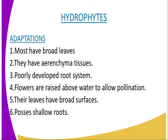Mesophyte habitats are also less windy with a shallow water table. The adaptations of mesophytes include: first, most have broad leaves, which are able to lose water to the environment because they are situated in places where there is a lot of water. Second, they have aerenchyma tissues, which can also be used for breathing. Third, they have a poorly developed root system, because they don't need to be deep-rooted as water is found shallowly in the soil.